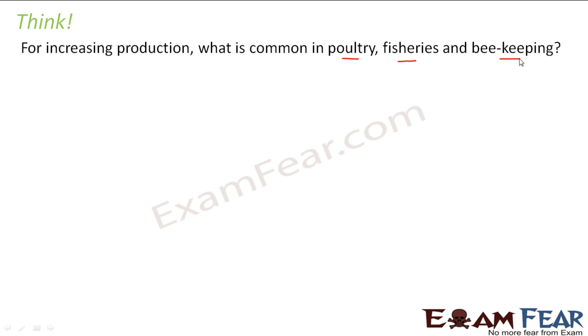So for increasing production, some of the common things which should be taken care of is, first is disease control. You need to control diseases because all these are actually sources of food for human beings. So if they are suffering from diseases, human beings in turn will also suffer from disease. So disease control should be taken care of.